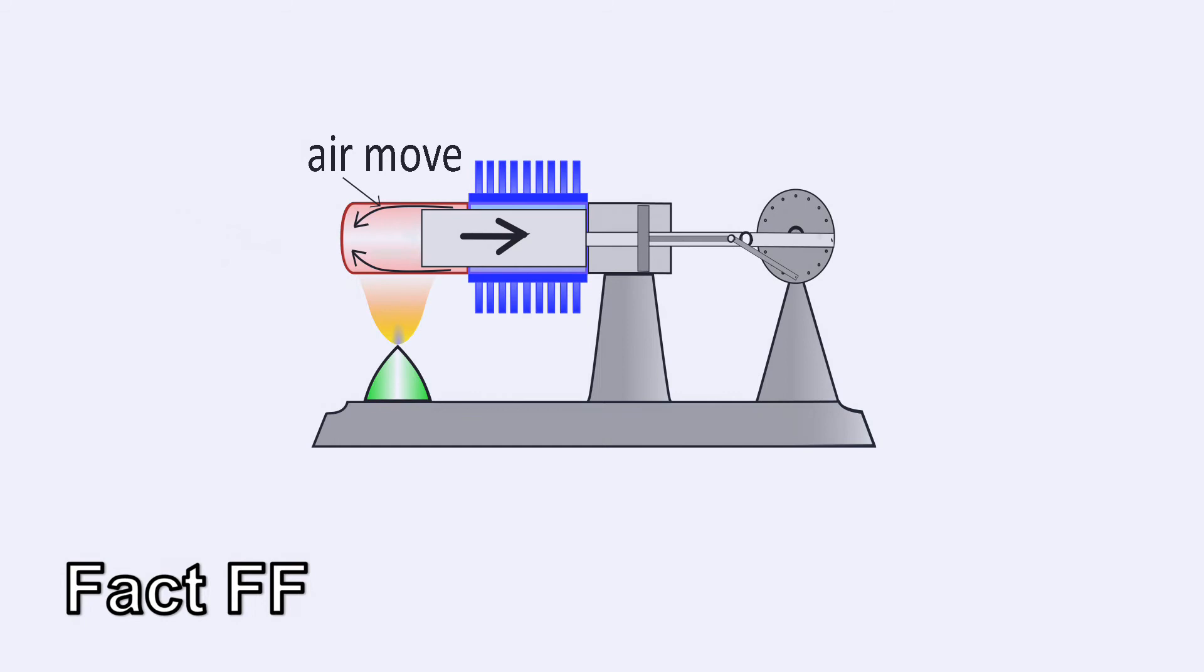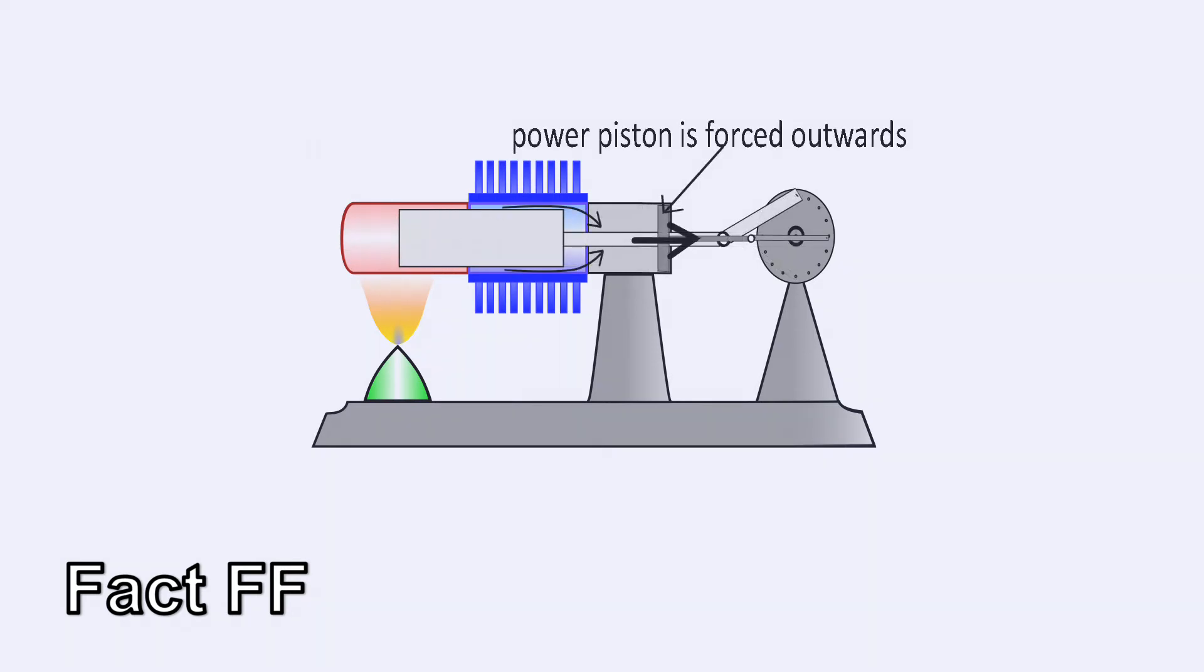As the displacer moves back, it forces the air within the cylinder to go to the hotter side. This causes the air to expand due to heat, and the power piston is forced outwards.